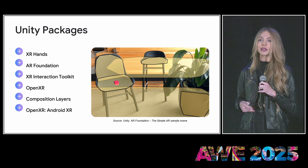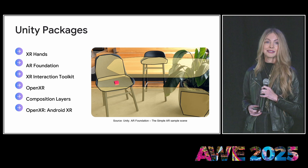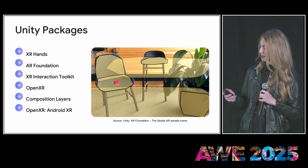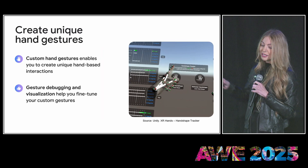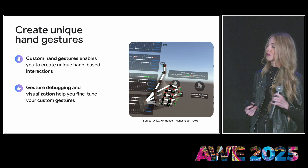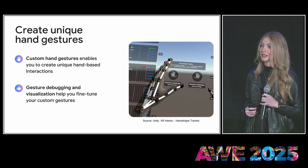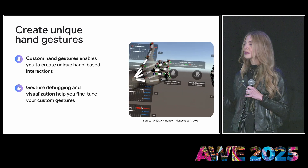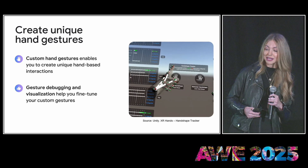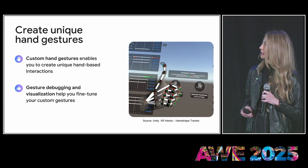These tools support key features like occlusion, persistent anchors, and input, so they're going to help your virtual content feel connected to the real world. The XR Interaction Toolkit lets you use natural hand poses and gestures to interact directly with the virtual space. With XR Hands, you can go beyond basic gestures too — our custom gesture detection supports actions like thumbs up, thumbs down, pointing, and more, so you can add extra personality to your interactions.